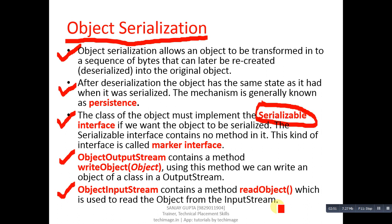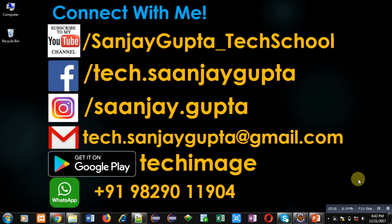This is all about object serialization. In short, it is the mechanism with the help of which you can store an object into a file and retrieve it back, and for this purpose you have to use the Serializable interface. If you want to watch more programming-related videos, you can subscribe to my YouTube channel. Thank you for watching.